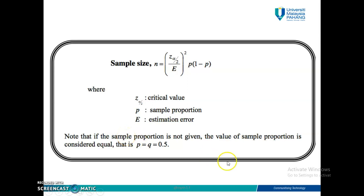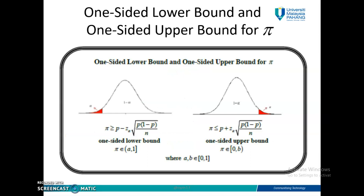You must remember that if the sample proportion is not given or is considered equal, you should put P or Q equal to 0.5. There are questions like this in tutorial questions. And this is the one-sided lower bound and one-sided upper bound for pi, for one population proportion.